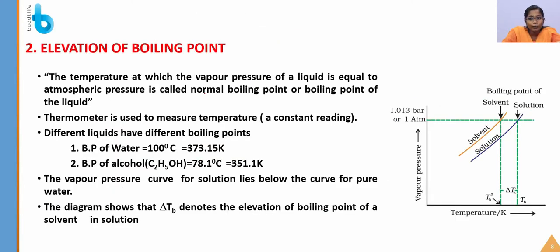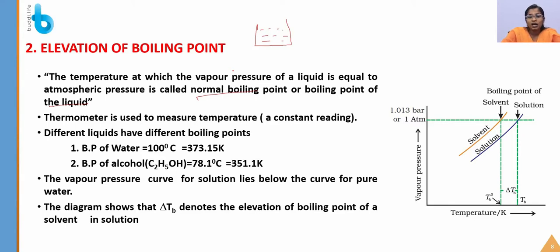Next is elevation of boiling point. The temperature at which the vapor pressure of a liquid equals atmospheric pressure is called the normal boiling point or boiling point of the liquid. When you keep heating a solvent in an open vessel, molecules evaporate from the surface. The atmosphere exerts pressure that blocks evaporation of the lower layers of the solvent; only surface molecules escape as vapor.